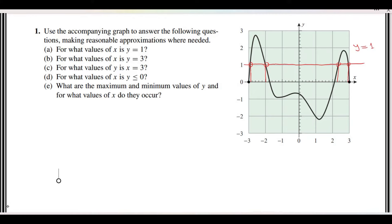So it will be roughly but not exactly because the graph is not that perfect. If that is minus 2 and every point is minus 2.2, this is minus 2.4, 2.6, 2.8. So you can write this as 2.7. So x would be, in this case, x is minus 2.9.